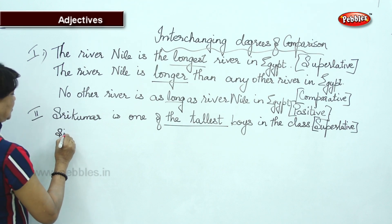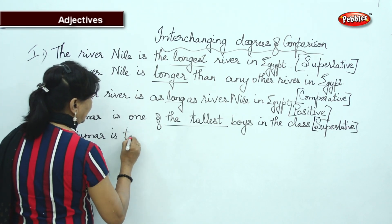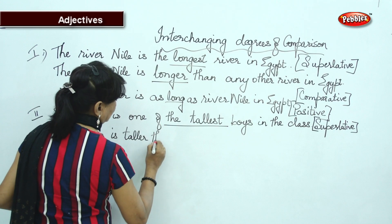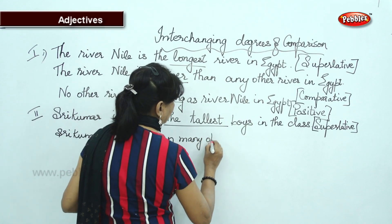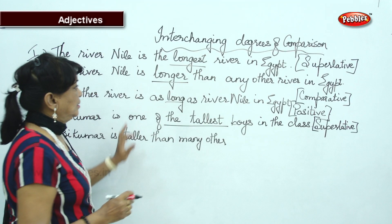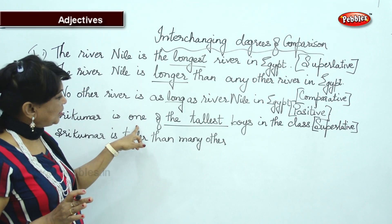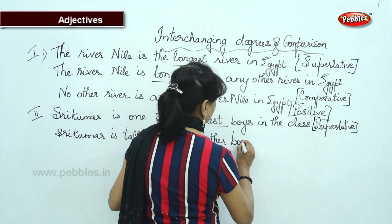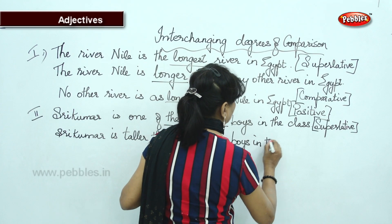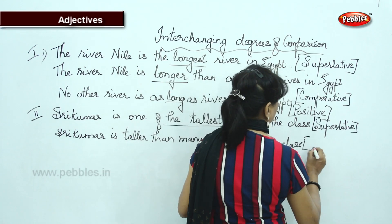I will change it to comparative: 'Shrikumar is taller than many other boys in the class.' I am not using 'any other' — we use 'any other' only when it is 'the tallest' or 'the longest.' But when we have 'one of the' in the superlative degree, we use 'many other.' So this will be comparative.